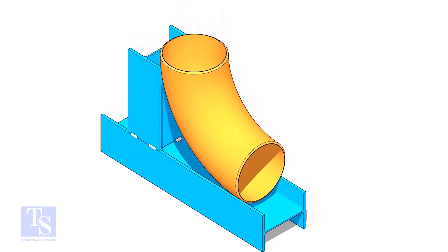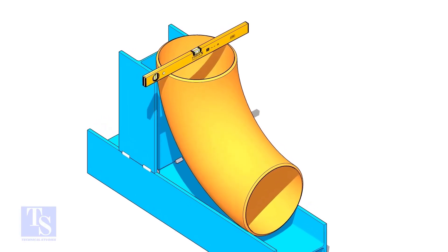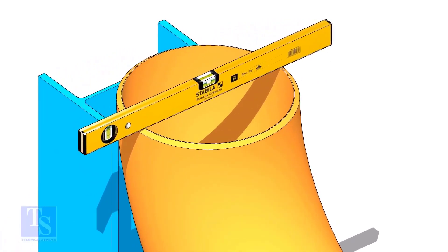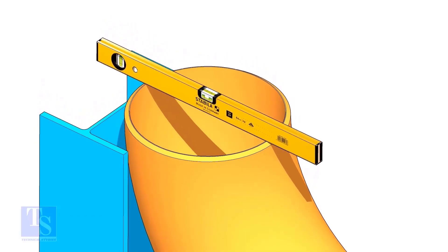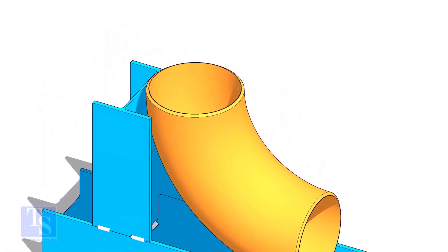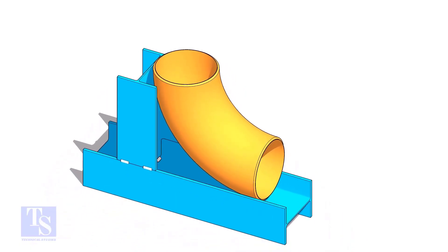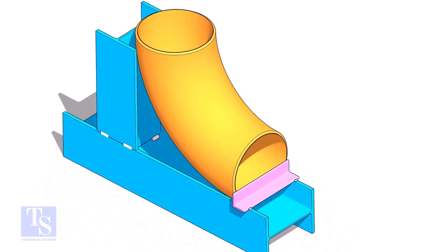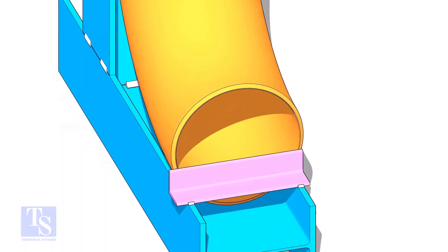Put the elbow in the jig. Level the top face of the elbow on both ways. Tack weld a piece of angle bar or a piece of a plate at the bottom side of the jig to arrest the elbow.